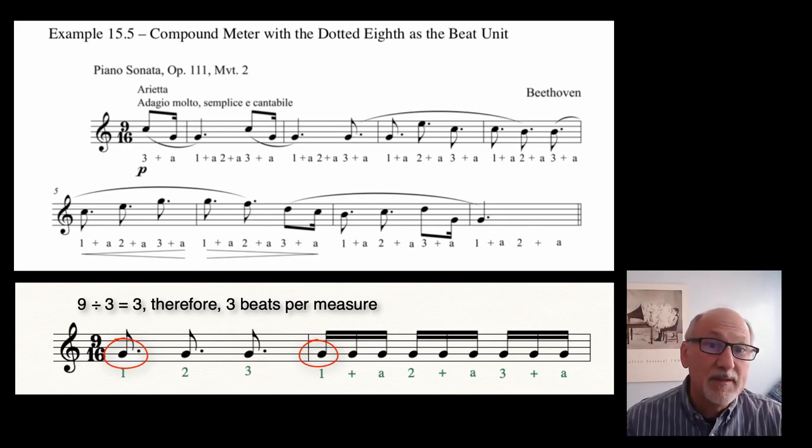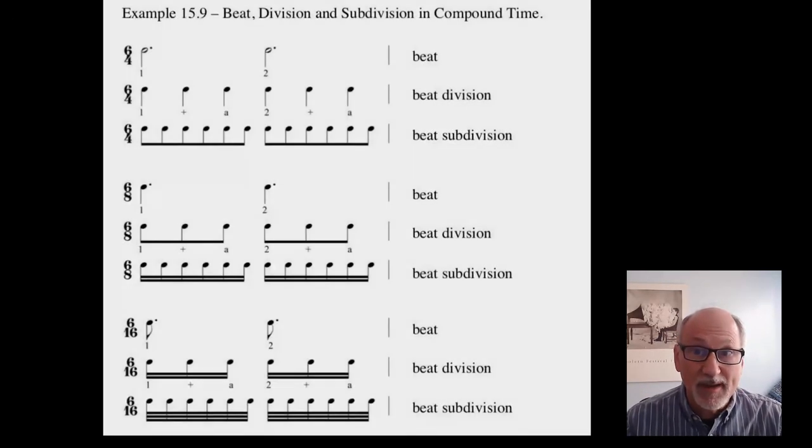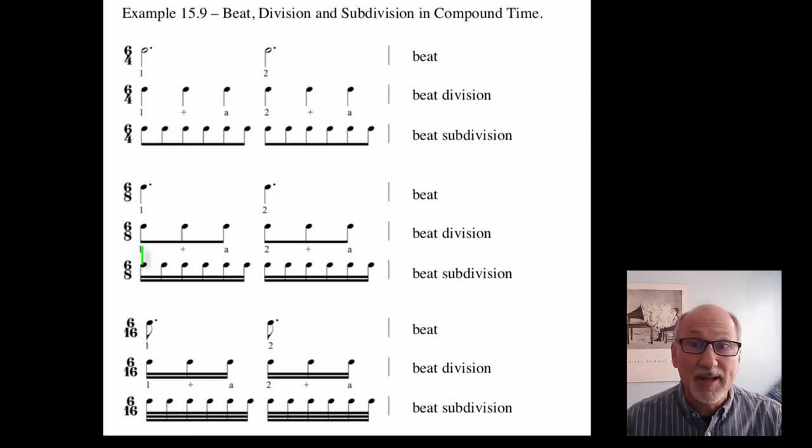As with simple time, the beat divisions can be further subdivided. Interestingly, the note values on the subdivision level are a result of dividing the division level equally into two parts, not three. This, of course, is the same as with simple time. And examples of the beat division and subdivision levels of several compound time signatures are shown here.